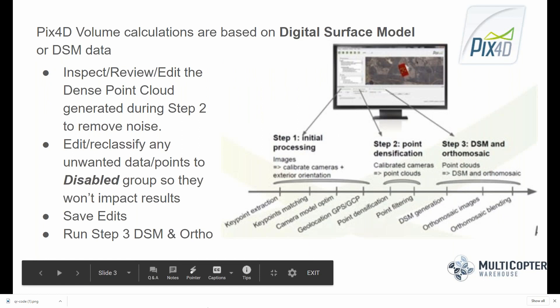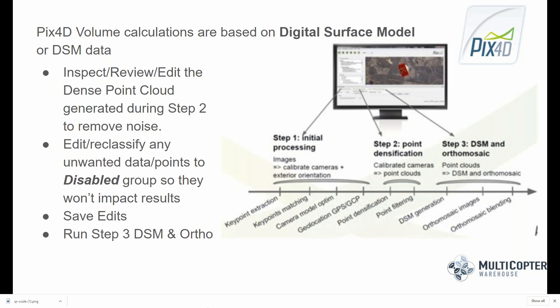Looking at the PIX4D workflow, you have three processing steps. During step 1, images are calibrated and you end up with an initial quality report and a sparse automatic tie point cloud. Running step 2, you create a dense point cloud, and you also have the option of outputting a 3D mesh or 3D model. The 3D mesh and model don't impact volume calculations, but you do want the 3D point cloud in good quality conditions — inspect, review, and edit it to remove noise or unwanted data.